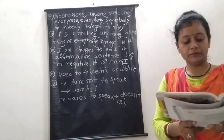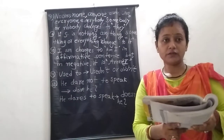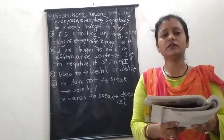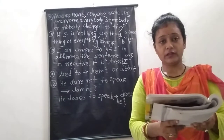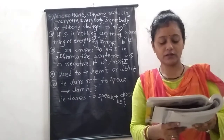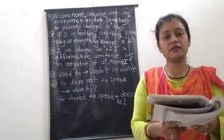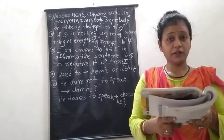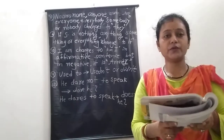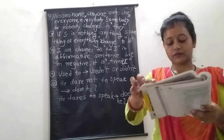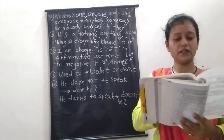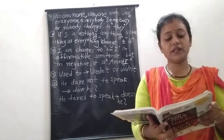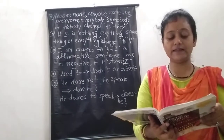Another example: 'He goes to office.' The 's' form of 'go' is there, so the question tag will be 'doesn't he'. If the sentence is affirmative — 'They play' — it will change to 'don't they'. Another example: 'There is a cow' — we write it as 'isn't there'.